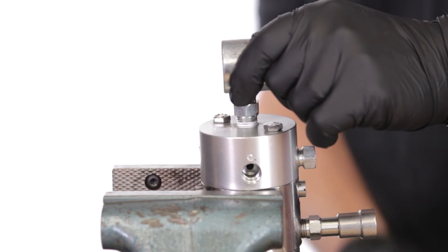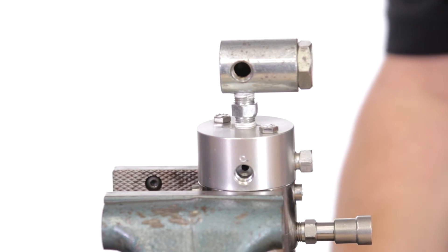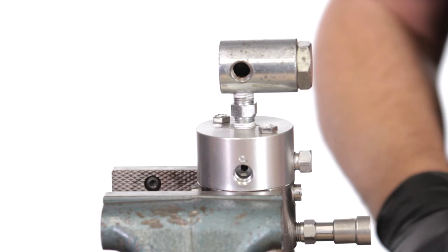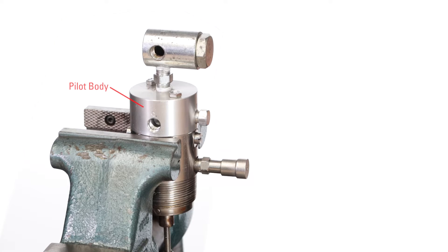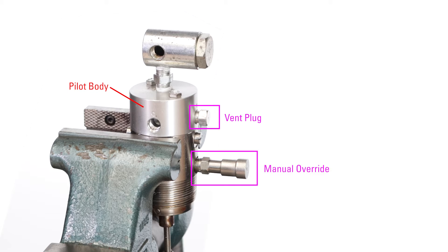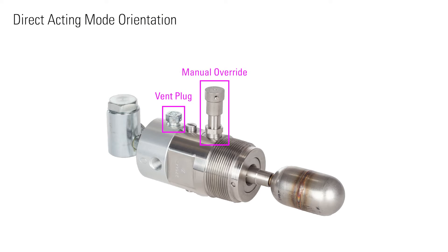If you are unthreading the switch from the vessel, place the switch in the vise, but tighten only on the flats so that you do not damage the threads or housing. Note the orientation of the pilot body. If the vent is on the same side as the manual override, it is set up in the direct acting mode. If you're not changing applications, you'll want to make sure to assemble this in the same orientation later.